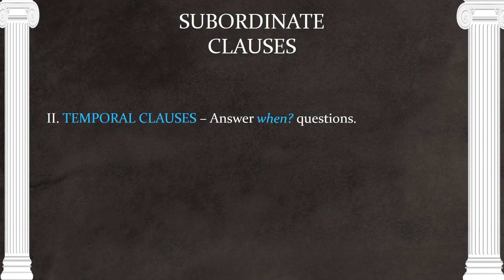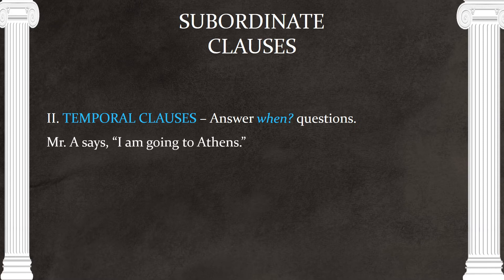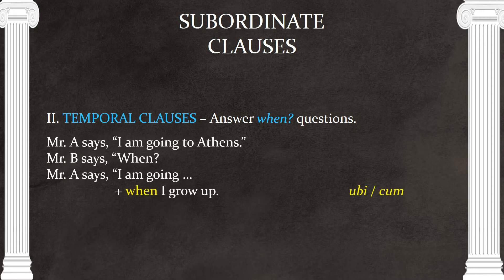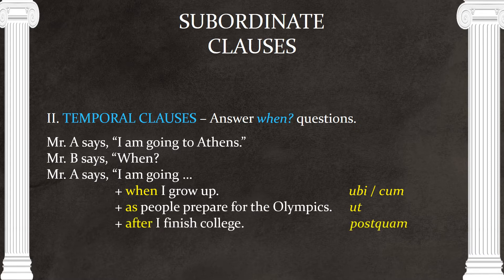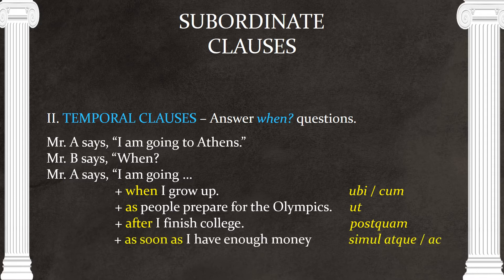The second type of subordinate clauses is temporal clauses, which answer 'when' questions. For example: 'I'm going to Athens when I grow up,' 'as people prepare for the Olympics,' or 'after I finish college,' which is indicated by the word 'postquam.' Again, 'I am going to Athens' could be a sentence by itself, but the temporal clause answers the 'when' question. There's also the tricky one: 'as soon as I have enough money,' indicated by 'simulatque' or just 'simulac.'